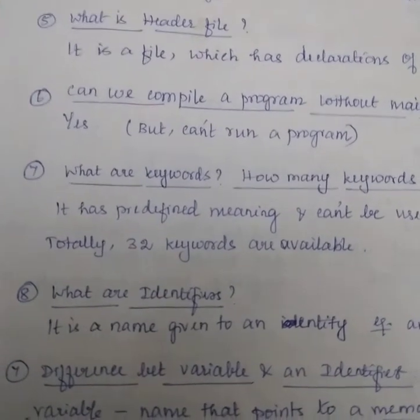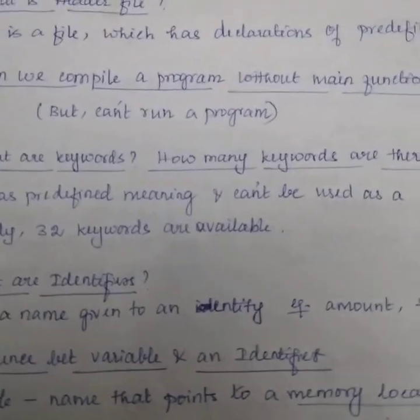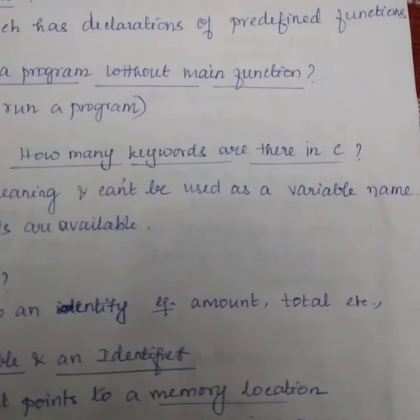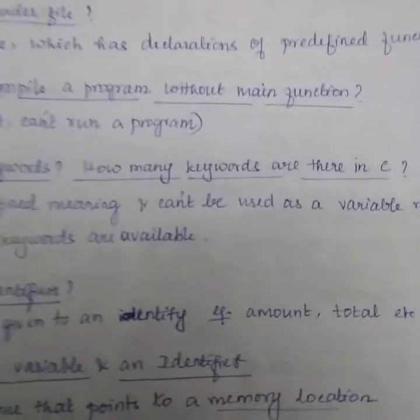What are identifiers? It is a name given to an entity. For example, amount, total, sum, etc.